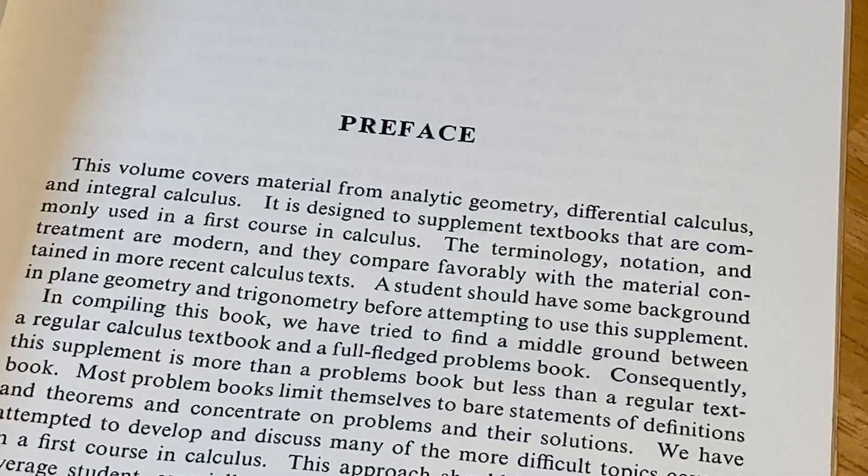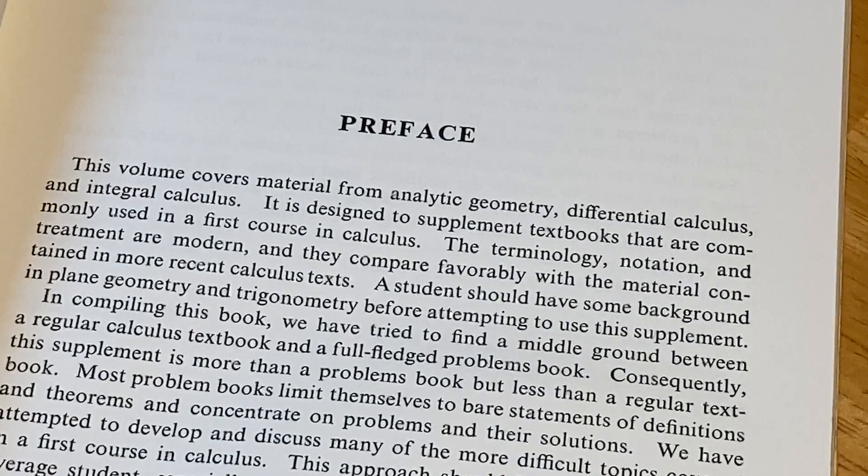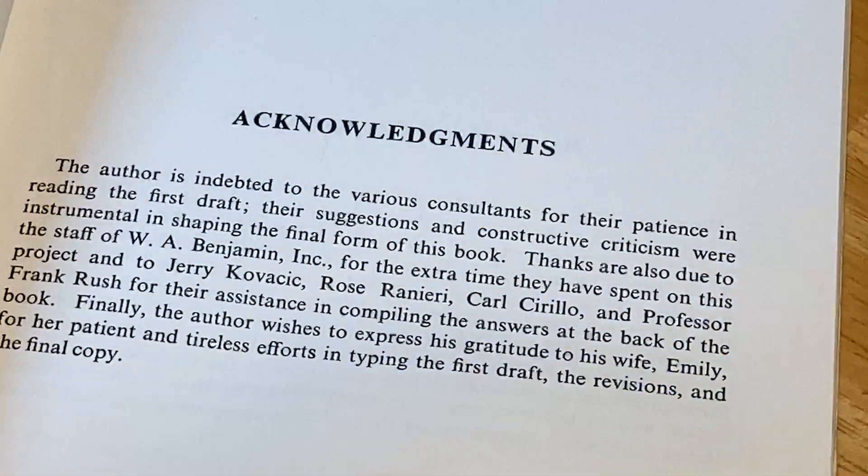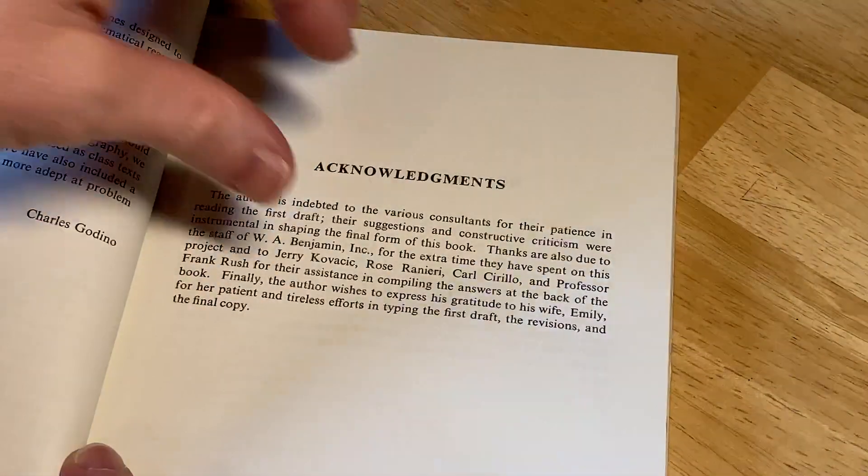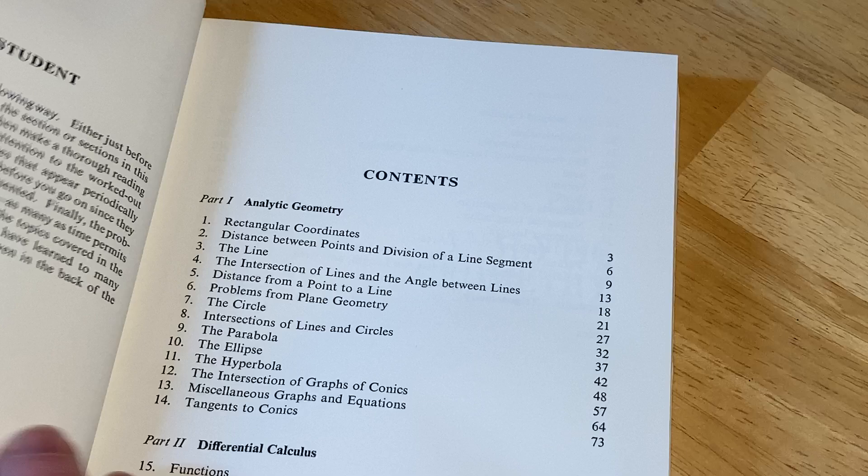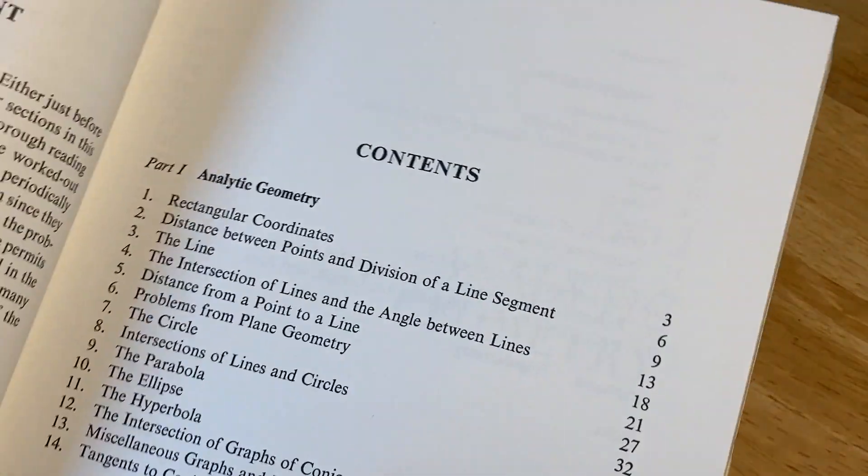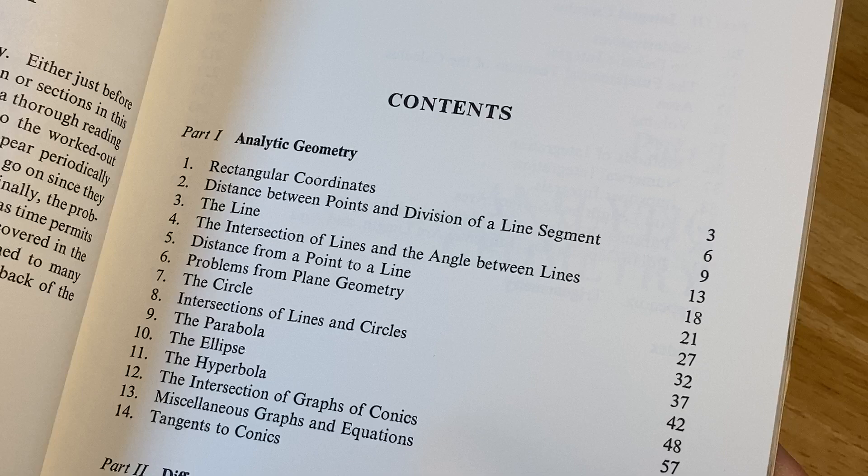The terminology, notation, and treatment are modern, and they compare favorably with the material contained in more recent calculus text. All right, so let's check this out. 1969. So, we have analytic geometry, that's our first part.